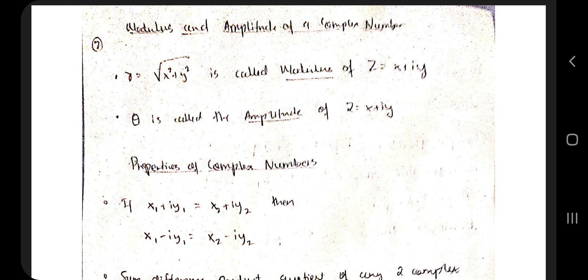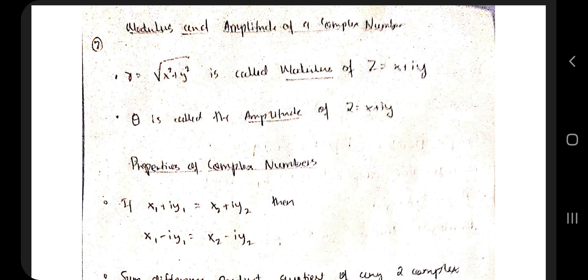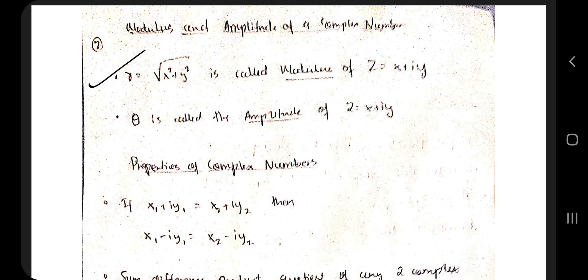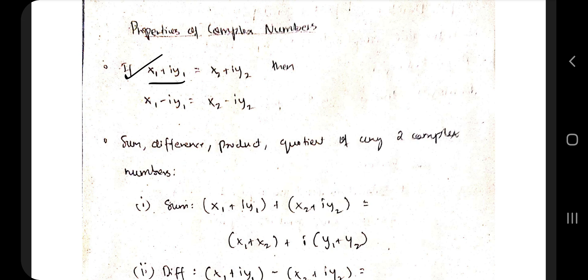The modulus and amplitude topic is very important from an exam point of view. The modulus of x + iy is nothing but √(x² + y²). Theta is the amplitude of the complex number. The properties are as follows: if x₁ + iy₁ is equal to x₂ + iy₂, then x₁ − iy₁ is equal to x₂ − iy₂.